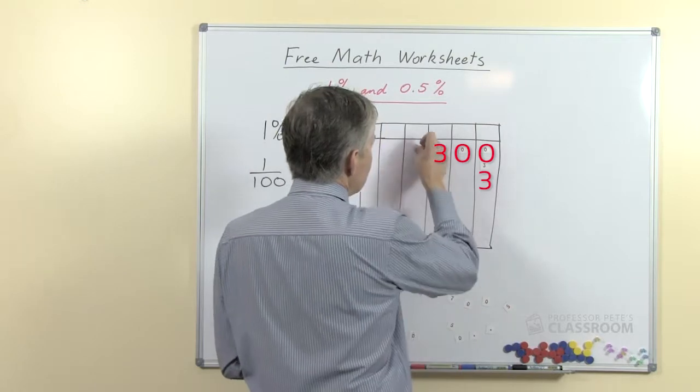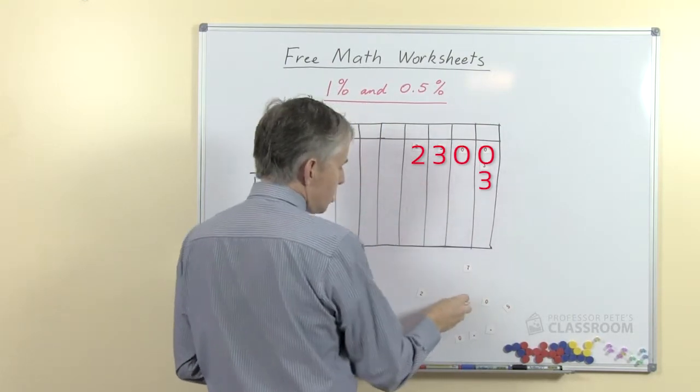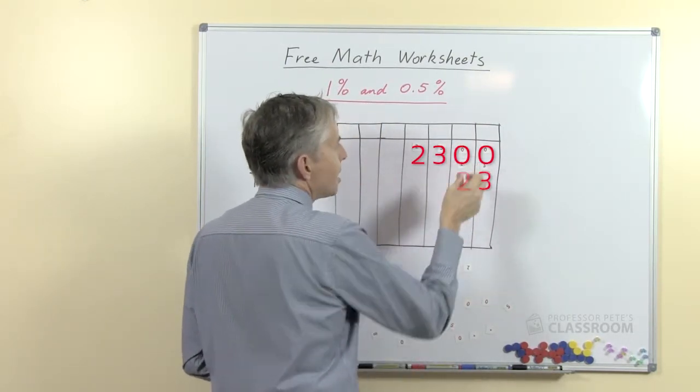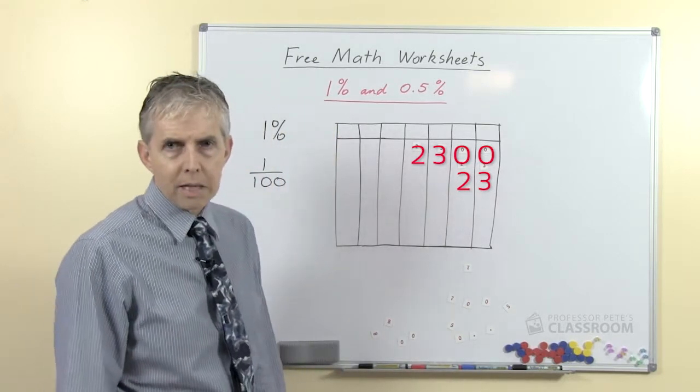So we can make a more advanced number say two thousand three hundred, what number will that become? It will become just plain twenty-three.